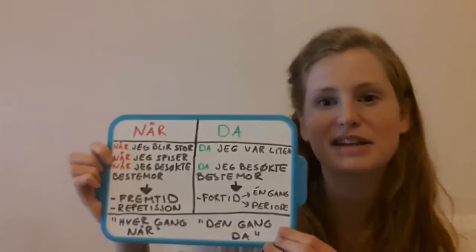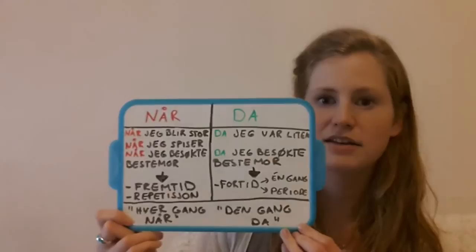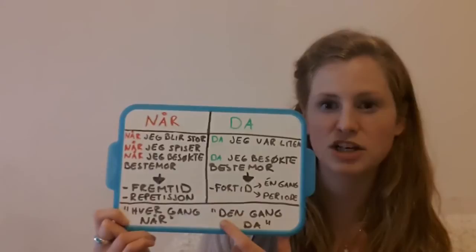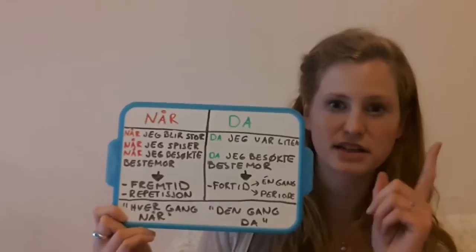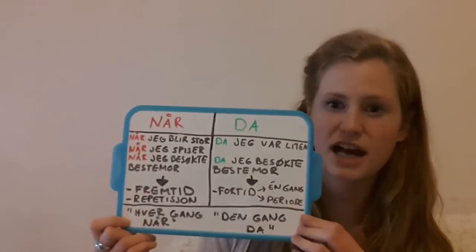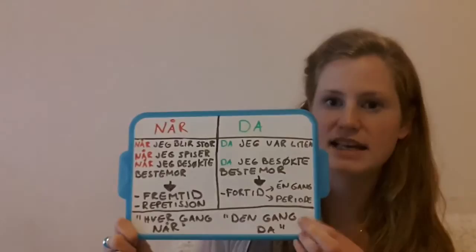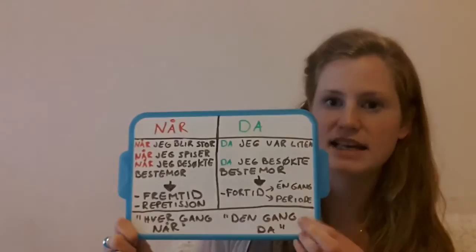When I was at school we learned a little rule to remember the difference. The rule went like this: 'DEN GANG DA' — 'that time when' — one single time. 'HVER GANG NÅR' — 'every time when' — for things that happen several times. DEN GANG DA, HVER GANG NÅR.